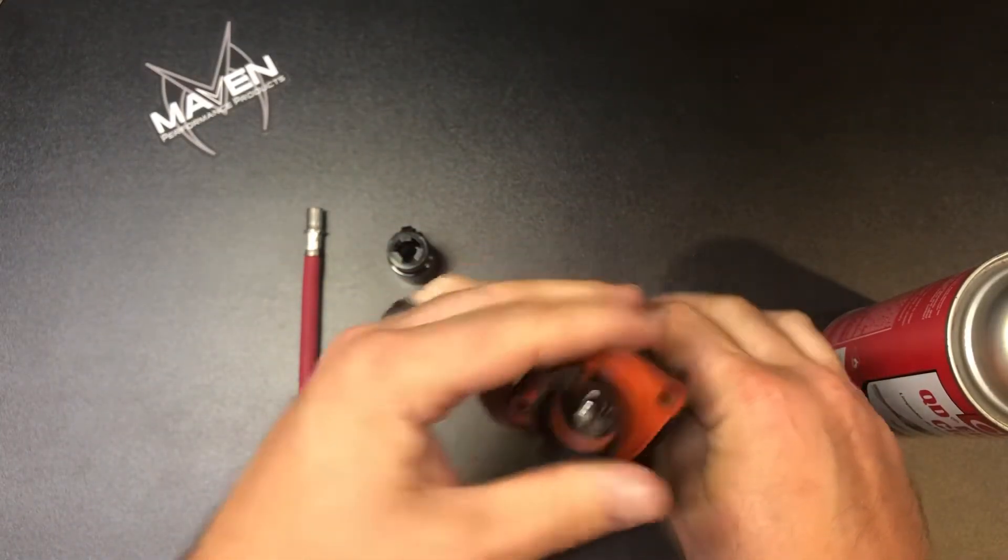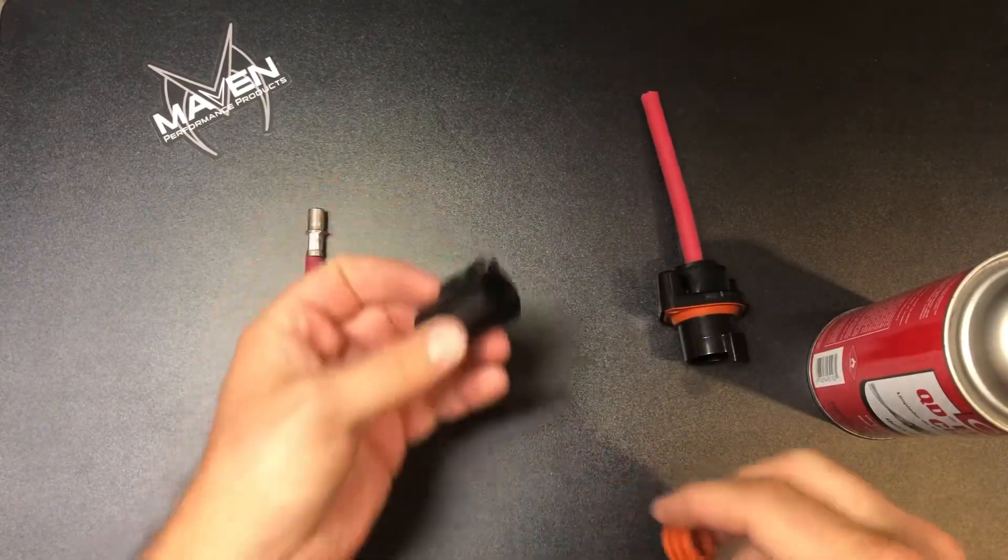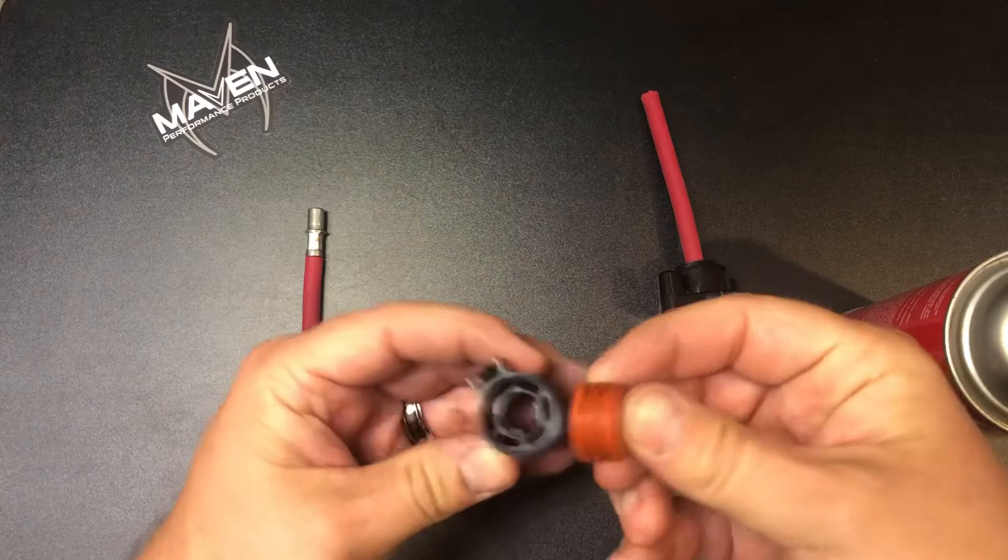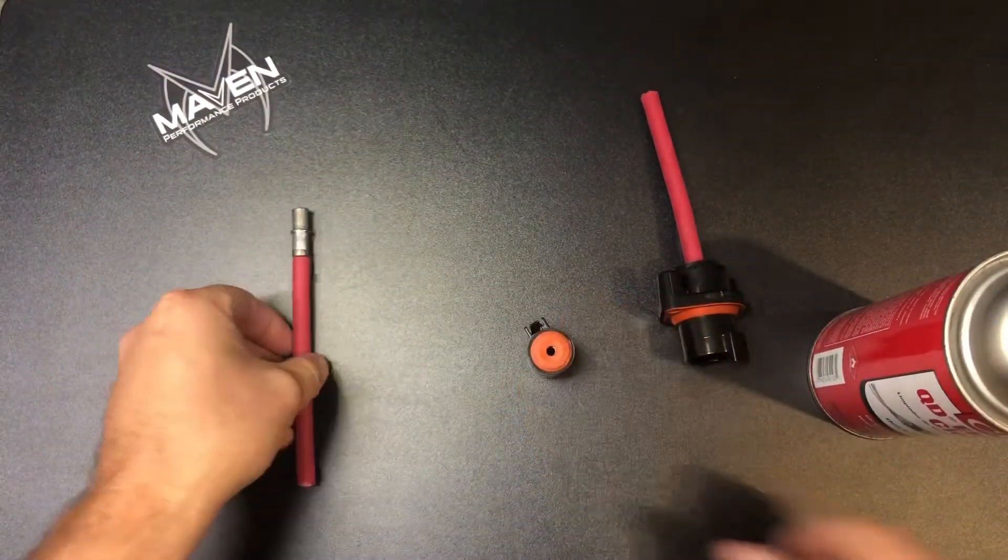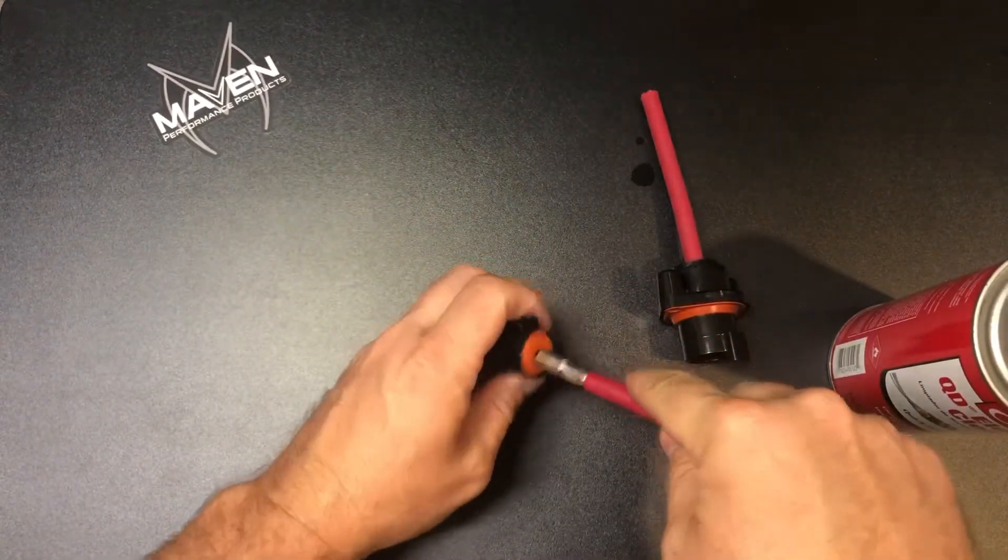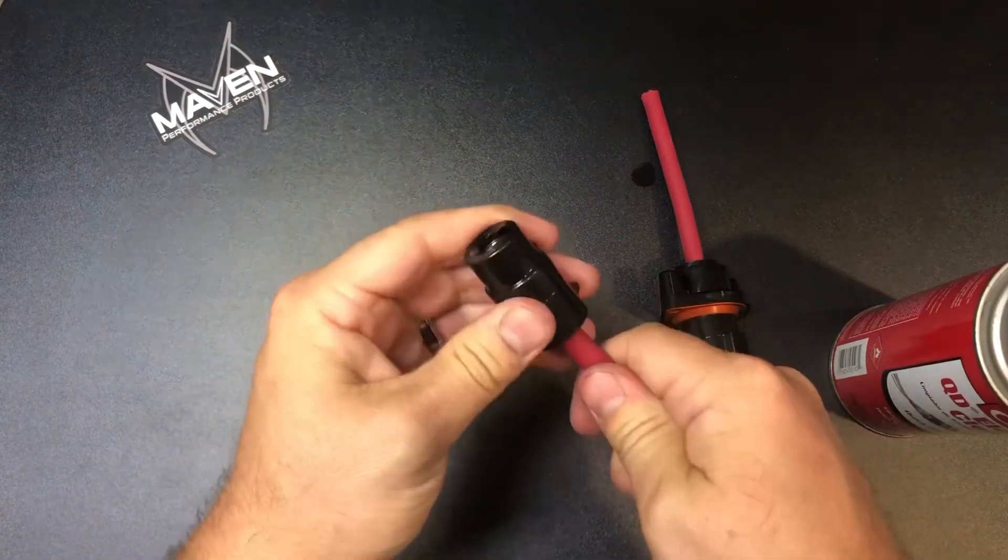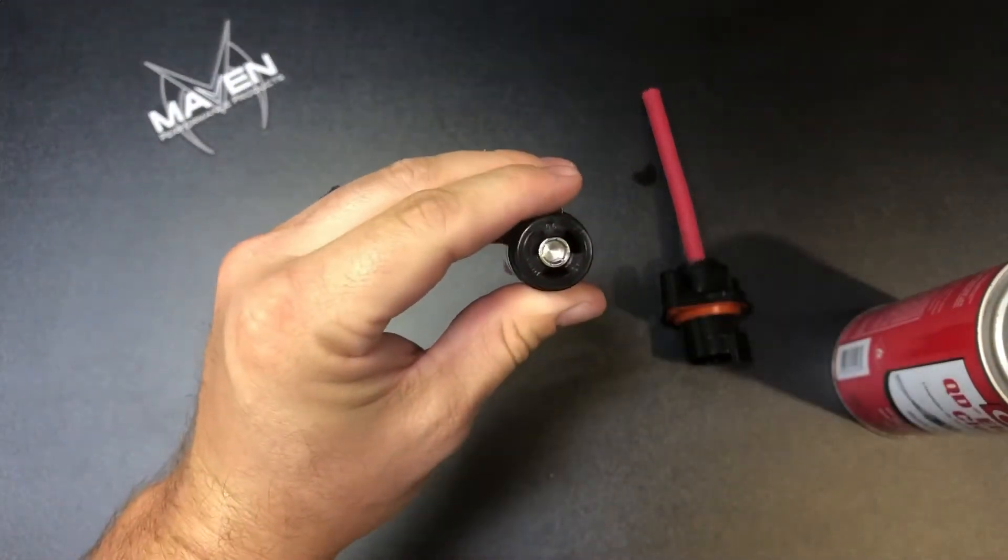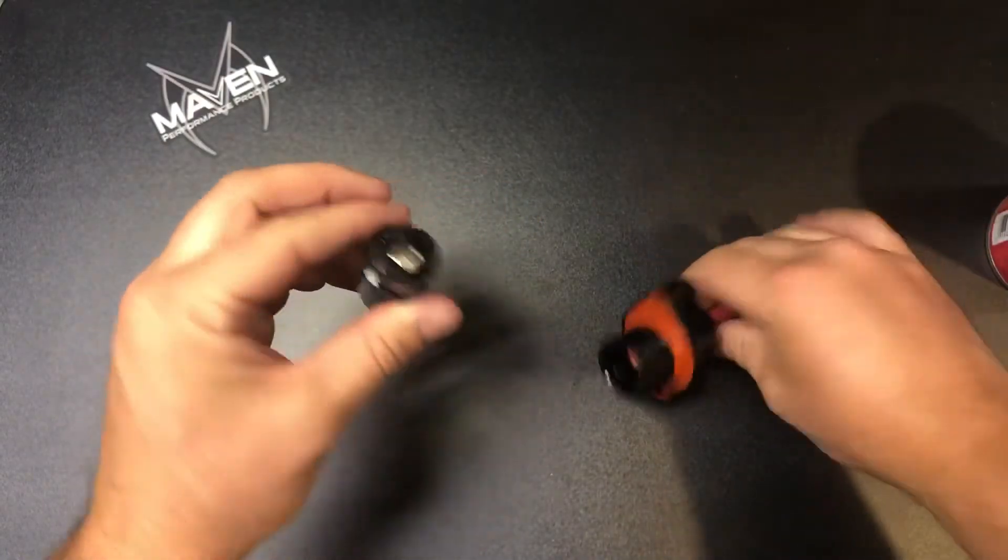You can see the pin coming through there. We'll do the same thing with the plug side. Drop this in, give it a little spray, and go ahead and get it right in there. You can hear it click in, and there you go. You've got your terminal seated in there.